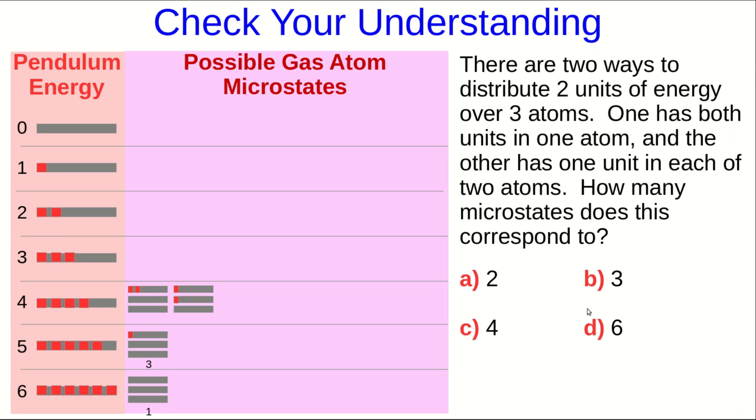Again, let's check that you're following the argument. So I've done part of the work for you here. Let's think about the macrostate where the pendulum has four units of energy. And so the gas atoms have two units of energy in total. And there are two ways for that to happen. Either a single gas atom has two units or two atoms each have one unit. Well, how many microstates does this give us corresponding to this macrostate?